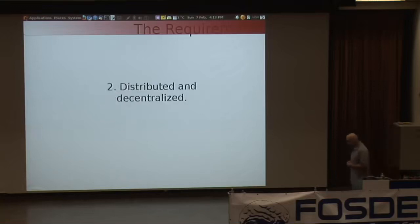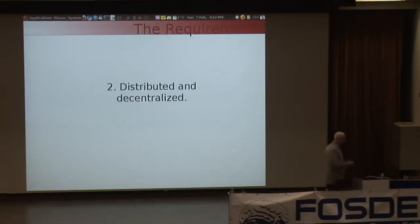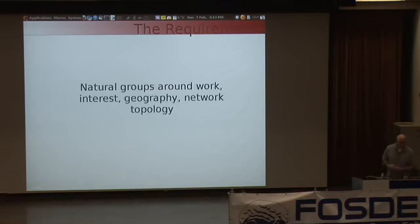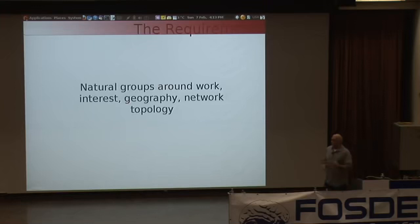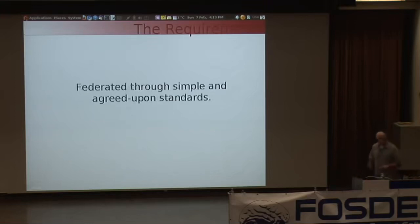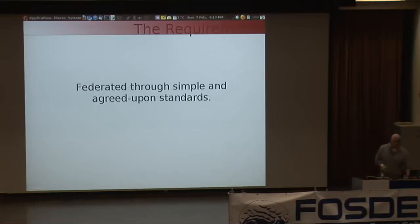The way we can participate in this social web is by providing the piece that is distributed and decentralized. SMTP is a good model of how a social web can work that is distributed and decentralized. We form natural groups around workplaces, areas of interest, geography, or your ISP. Then these networks are federated through simple, agreed-upon standards.